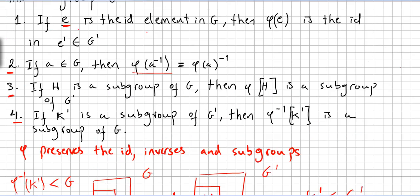Repeating quickly: if E is the identity element in G, then Phi of the identity is the identity in G'. If A is in G, then Phi of A inverse equals the inverse of Phi of A. If H is a subgroup of G, then Phi of H is a subgroup of G'. And if K' is a subgroup of G', then the inverse image of K' is a subgroup of G. So Phi, a homomorphism, preserves the identity, preserves the inverses, and preserves subgroups.